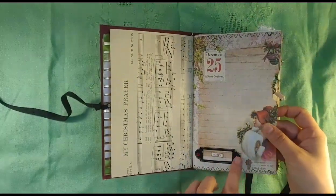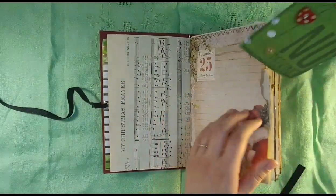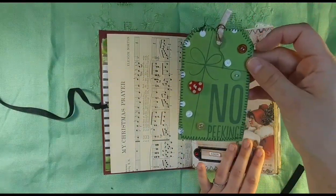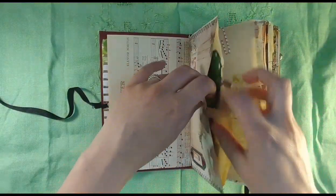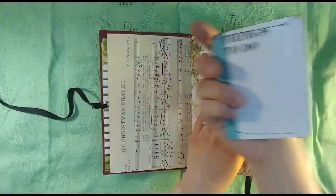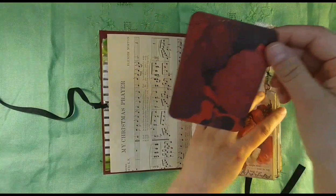Here's another one where I added this little frame. In here we have this tag that says 'no peeking,' and I stitched on a bunch of buttons. There's also a journaling card that says 'things to do' with five lines.